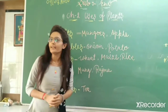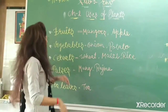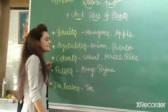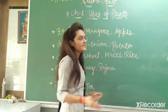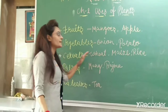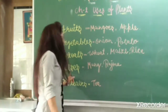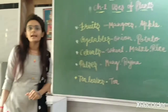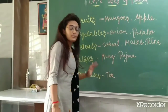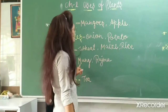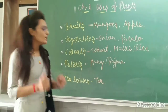My favorite vegetable is potato. Now third is cereals. In cereals we have grain, maize, rice. These all are forms of cereals. Next are pulses. In pulses we have moong, rajma, chana. These all come in pulses.